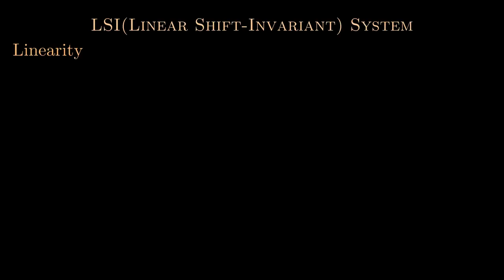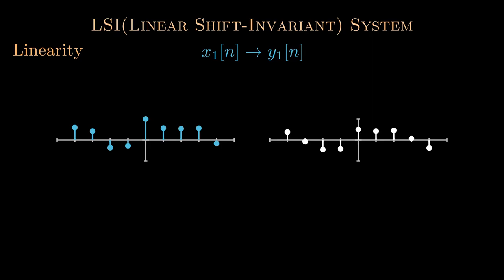Let's talk about LSI systems and the first property of linearity. So if we have a signal x1[n] and it is given to the LSI system and it produces y1[n], in other words we can say that y1[n] is the system response of x1[n].